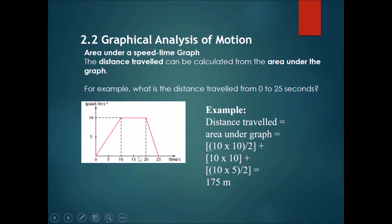I'll add it to 10 times 10, the area of the rectangle. And then after that, over here is 5 times 10 divided by 2, the area of this last triangle. After I get all of this, and I add them all up together, it should get 175 meters. All right, let's go. Thank you.